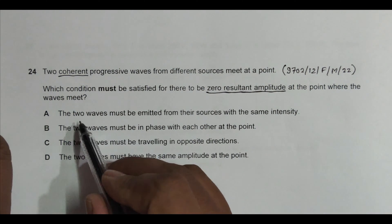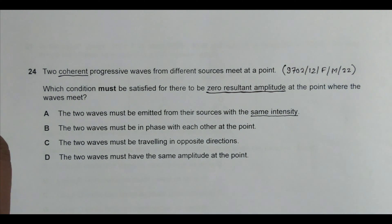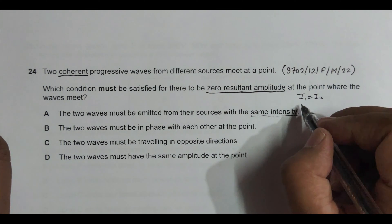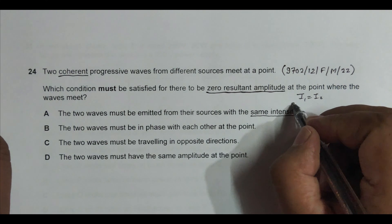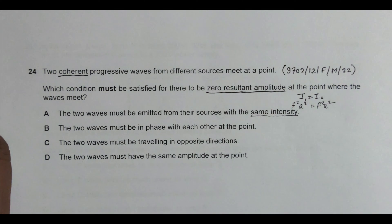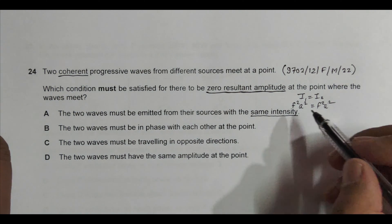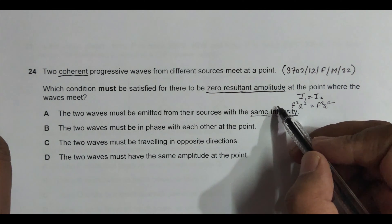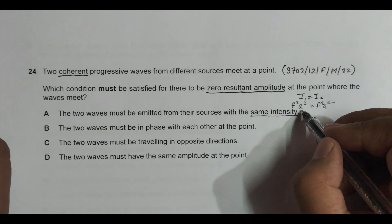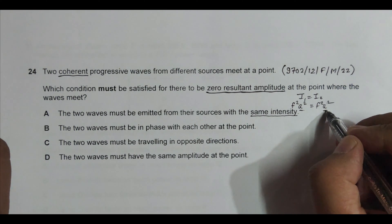The first option says the two waves must have the same intensity, so I1 equals I2. But intensity has got factors like frequency squared and amplitude squared, as well as density and velocity and so on. So if we need zero amplitude, the amplitudes should be equal definitely, but equal intensity alone does not guarantee that.